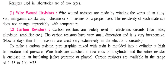Resistors used in the lab are of two types: wire-bound resistors and carbon resistors. Wire-bound resistors are made by winding wires of alloy — that is manganin, constantin, nichrome, or similar ones — on a proper base. The resistivity of these materials does not change appreciably with temperature.